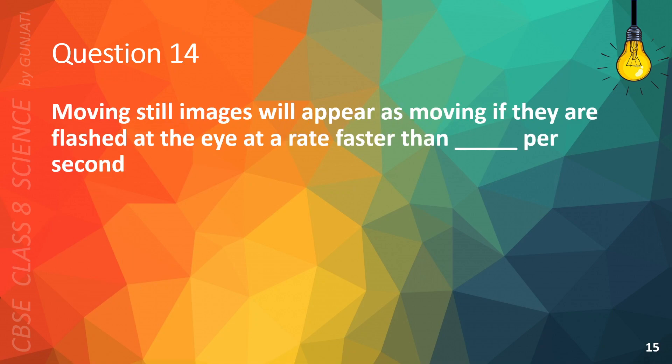Question 14. Moving still images will appear as moving if they are flashed at the eye at a rate faster than blank per second. A. 4th, B. 8th, C. 16th, or D. 32th. The correct answer is C, 16th.